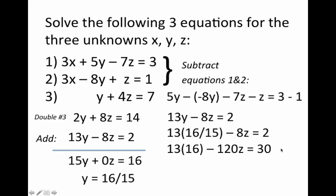13 times 16 is 208, and if we take that 208 and move it over to the right-hand side of the equation, we'll have minus 120z equals 30 minus 208. Or z, it turns out on your calculator, will be 1.48.